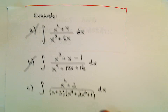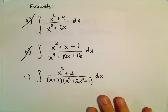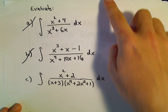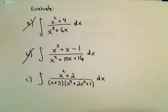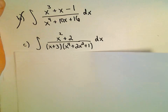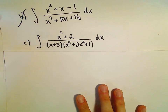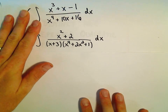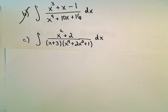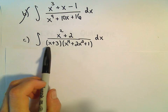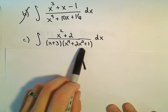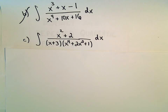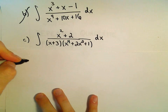Here we're going to do one more example of a partial fractions problem — they can be a little bit long. We're going to integrate x squared plus 2 over x plus 3 times x to the 4th plus 2x squared plus 1.